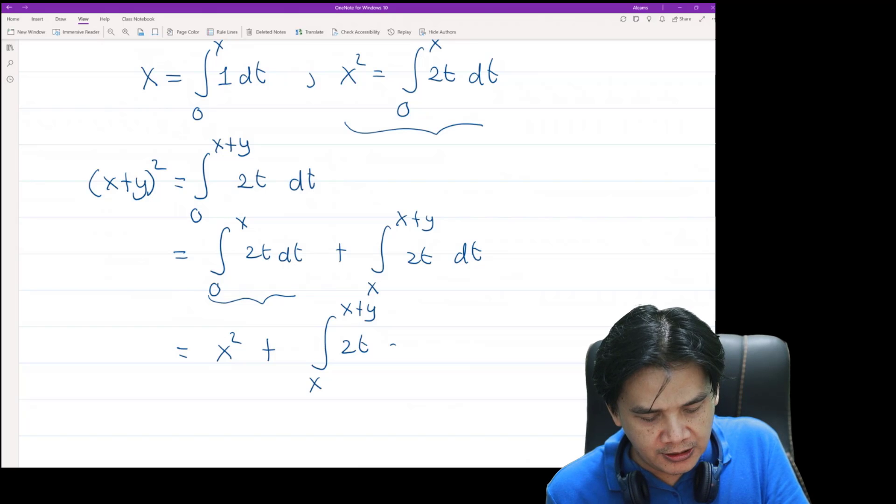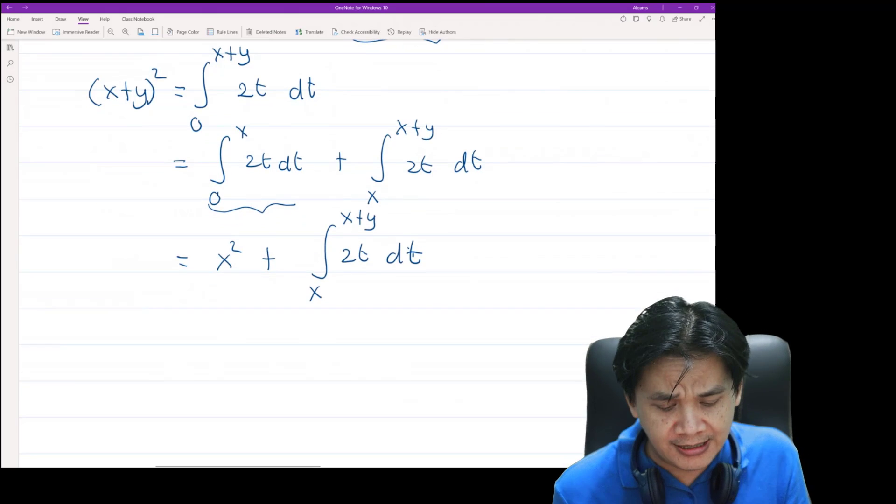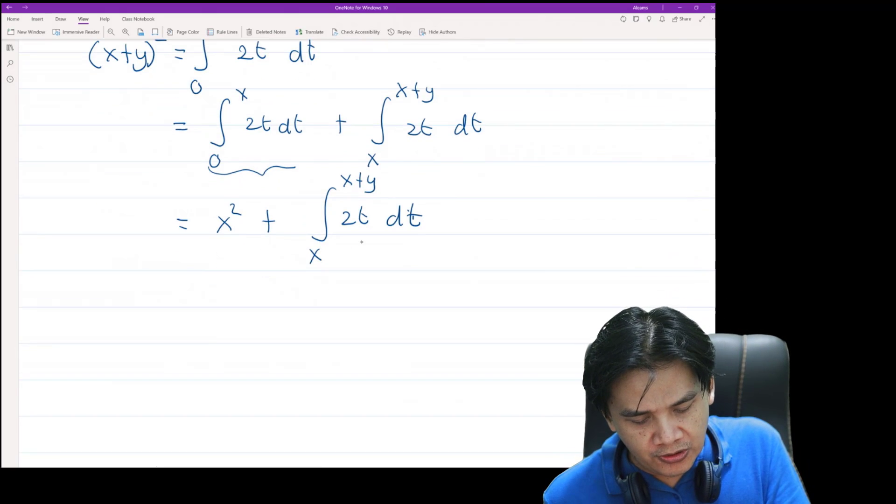Now let me introduce a new variable s, so s is a variable such that t is equal to s plus x. So it follows that dt is equal to ds.